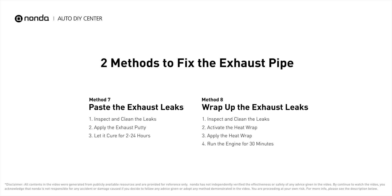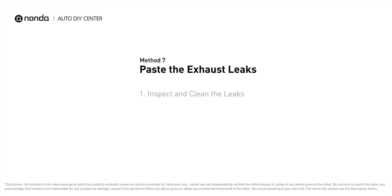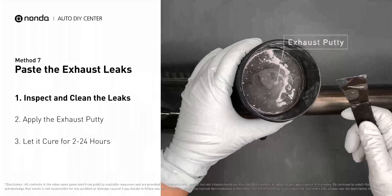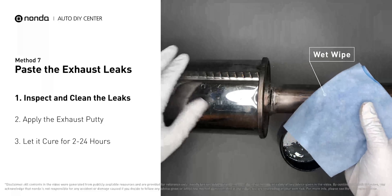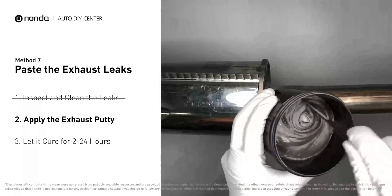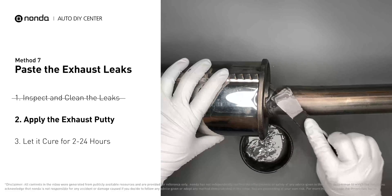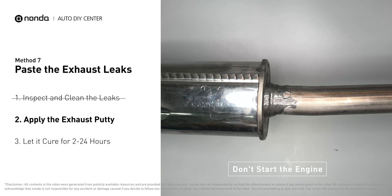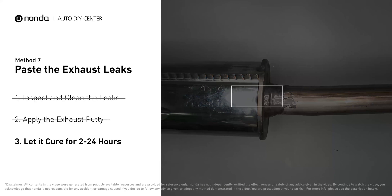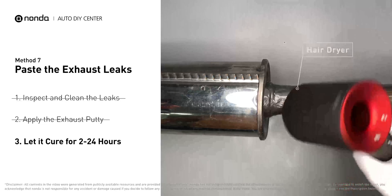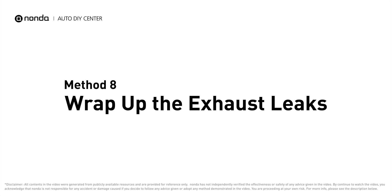Here are two methods to repair the exhaust pipe. Method 7: Paste the exhaust leaks. If you have a leak, get some exhaust putty to seal it up. Get sandpaper and a wet wipe to clean the leaking area for better application. Stir the paste well to activate it, then apply and press the paste to seal the leaking area. After application, don't start the engine, because positive pressure from the exhaust will blow out the paste. Let it cure for 2 to 24 hours depending on external temperature — the hotter it is, the quicker it will cure. You can use a hair dryer to heat it up and make it cure faster.